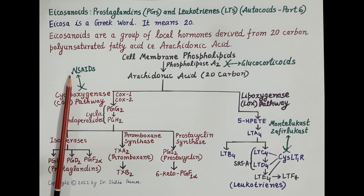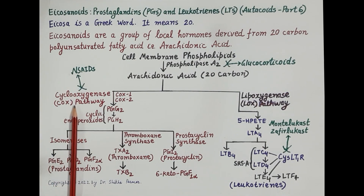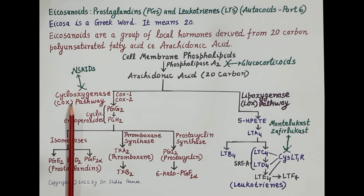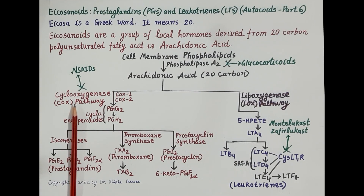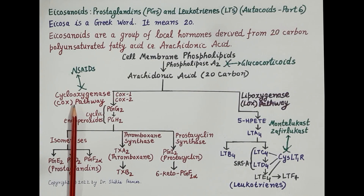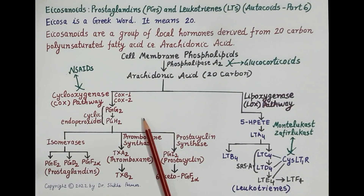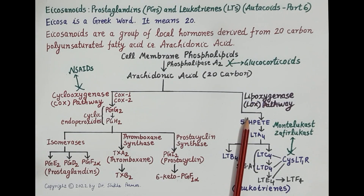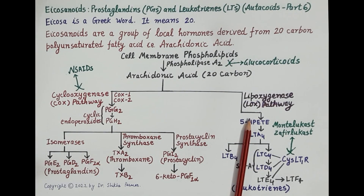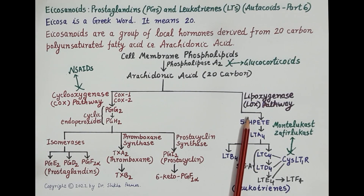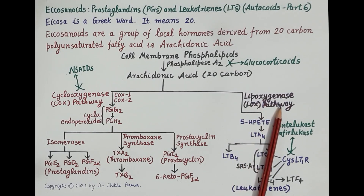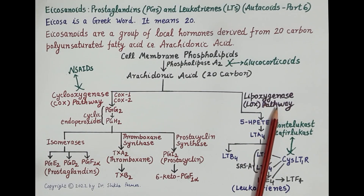Non-steroidal anti-inflammatory drugs (NSAIDs) inhibit the enzyme cyclooxygenase and reduce synthesis of prostaglandins that cause pain, fever, and inflammation. Now let's discuss the lipoxygenase pathway, which is mediated by the enzyme lipoxygenase and produces leukotrienes.